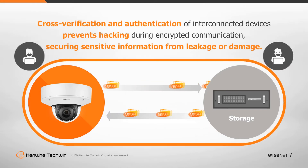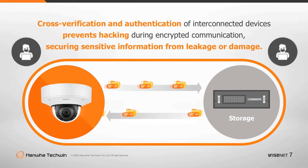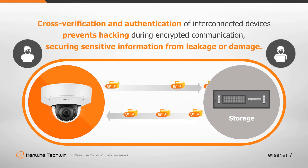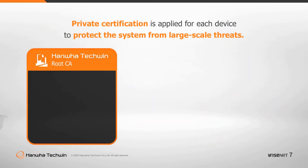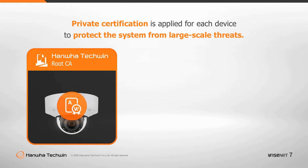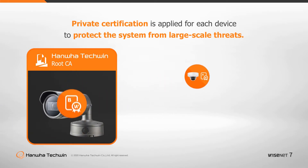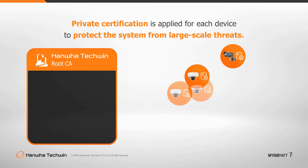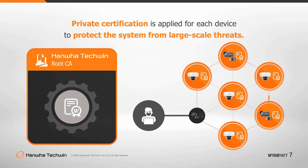Hanwha Techwin supports mutual authentication of interconnected devices to prevent data leakage during encrypted communication, securing sensitive information from breach or damage. In 2018, Hanwha Techwin introduced its own Root CA, inserting device authentication into each product at the manufacturing stage. Even if one camera is hacked due to security vulnerabilities, the entire system will still be protected as the authentication is unique for each device.